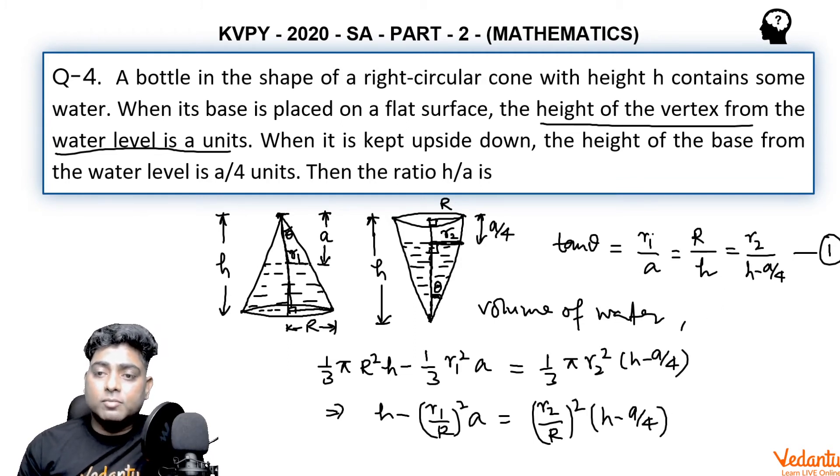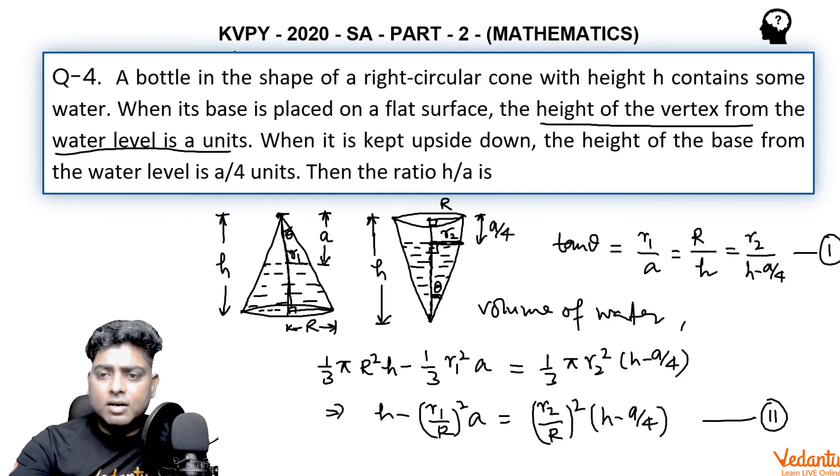I will write the relation between small r1 and capital R. The ratio r1 by R equals a by h, so r1 by R is a by h whole square into a.